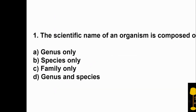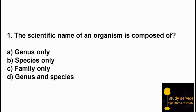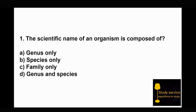Let's start with our first question: The scientific name of an organism is composed of. Option A: genus only. Option B: species only. Option C: family only. Option D: genus and species. The answer is D — whatever organism it is, plant or animal, the scientific name starts with genus followed by species. For example, Mangifera indica — Mangifera is the genus and indica is the species. In the scientific name, both parts are underlined.